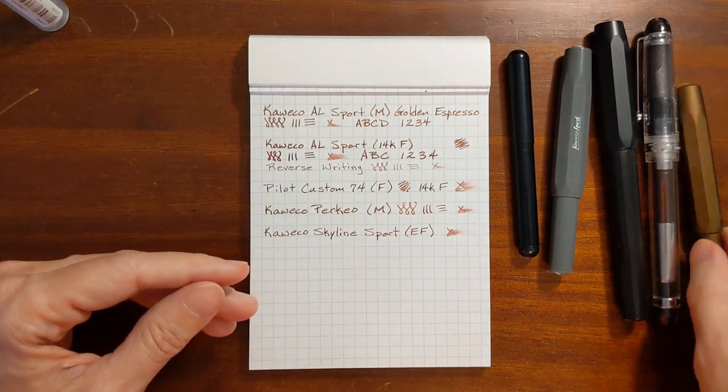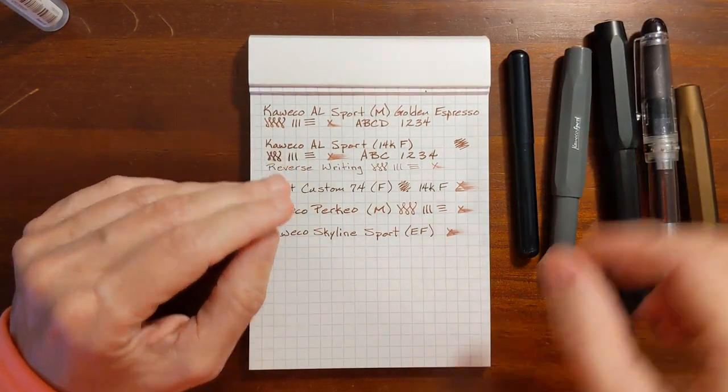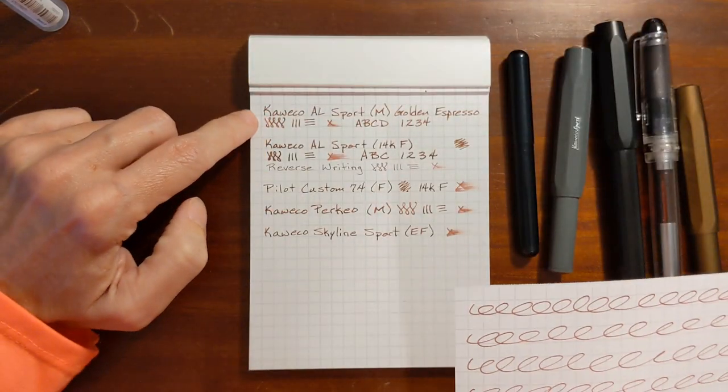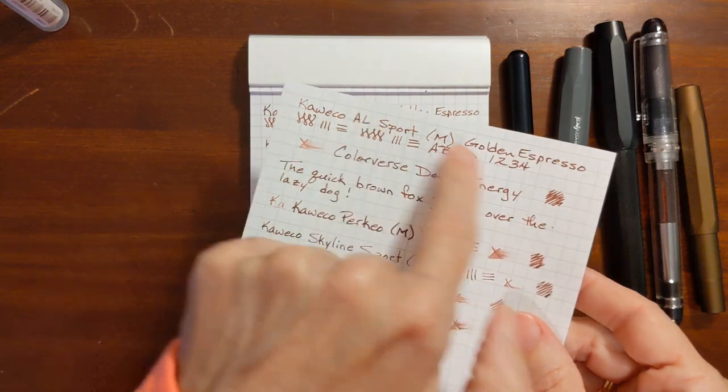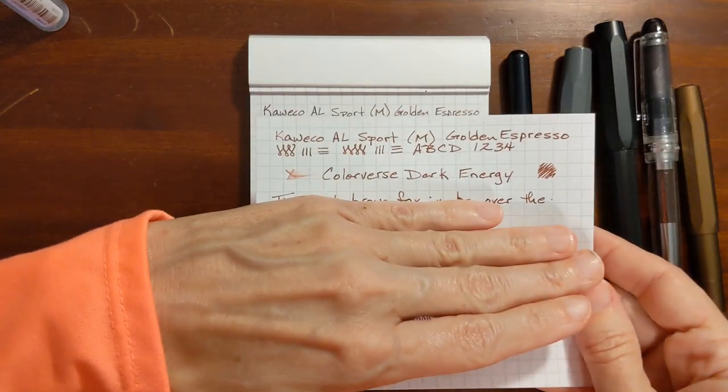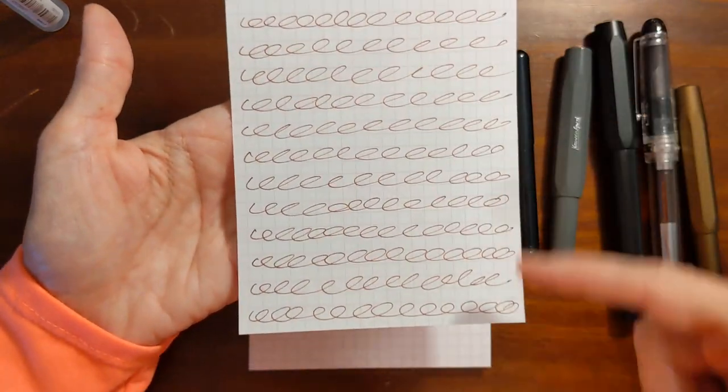But I will say with my medium nib on this AL Sport I tested it. This is just dipping it one dip in the ink from the last video. After I did my writing sample up here I did a writing sample on this page, these are the other pens here, but I did a writing sample here.